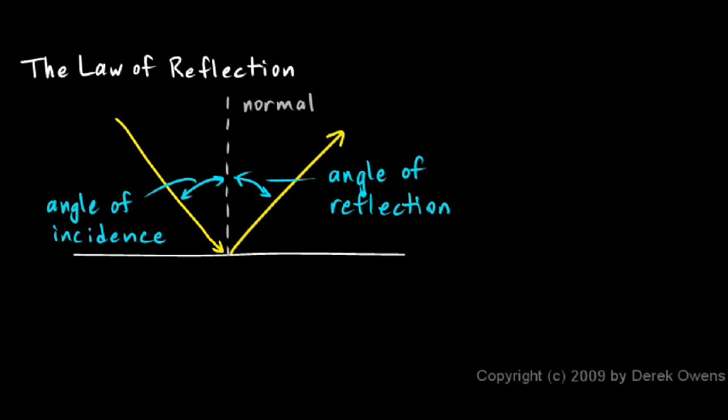Now the law of reflection is very simple and intuitive. It simply says that the angle of incidence equals the angle of reflection. So this angle, the incoming angle measured relative to the normal, equals the reflected angle measured relative to the normal.